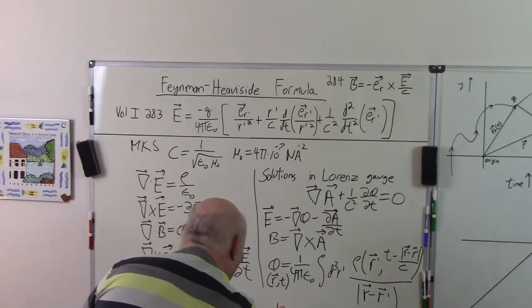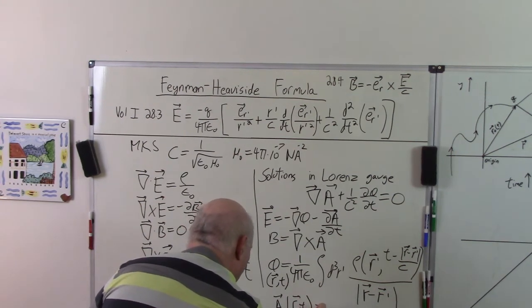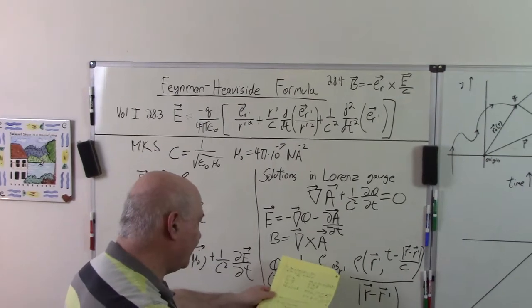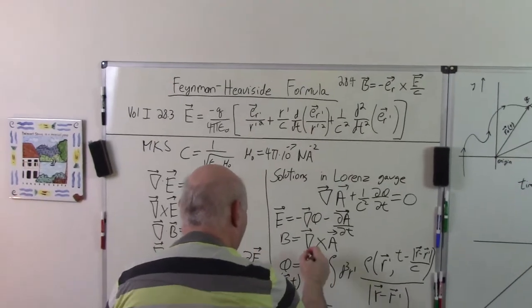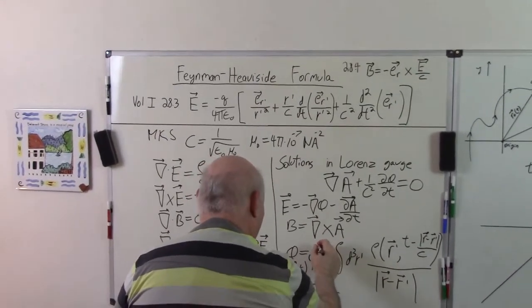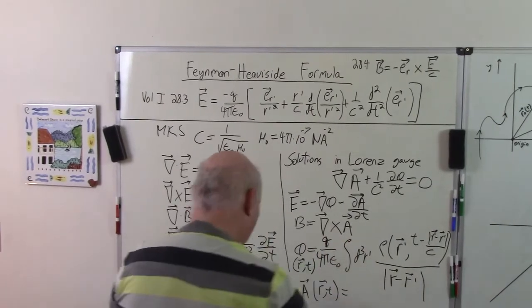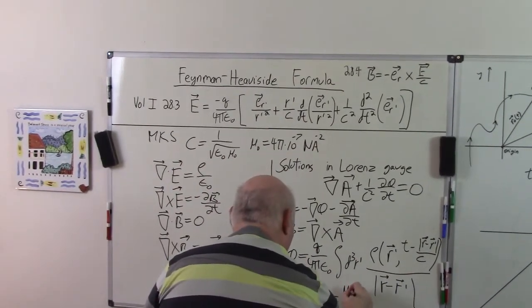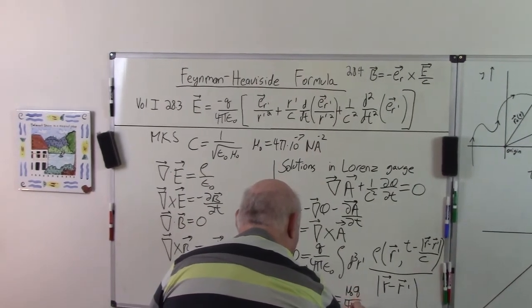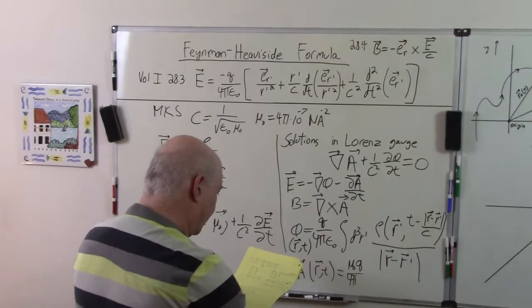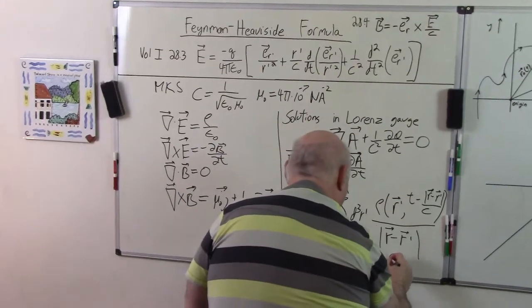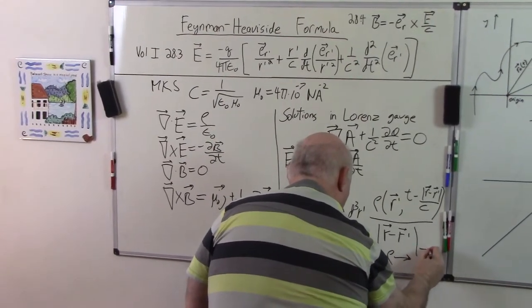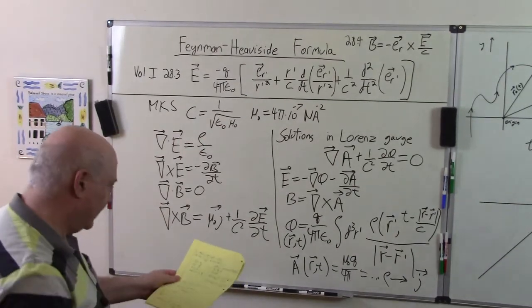The vector potential, A of R comma T, is exactly the same except where I have rho, I put, well, the constants instead of being, first of all, I think I left off the charge Q and here it would be mu_0 Q over 4 pi. So the constants changed a little bit. Everything else is the same except rho goes to J. I don't have enough room to write it down anymore.